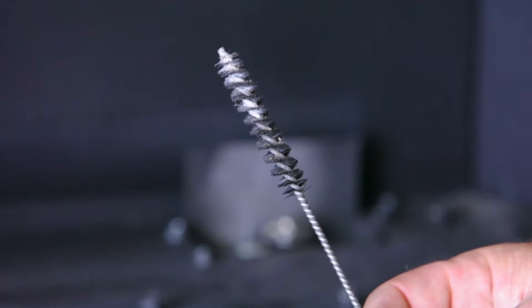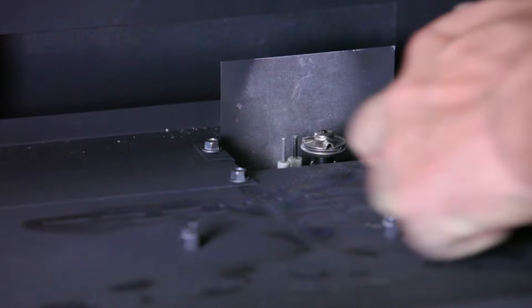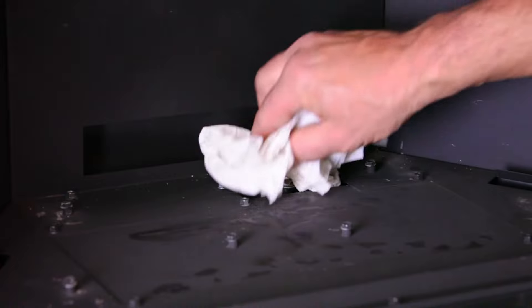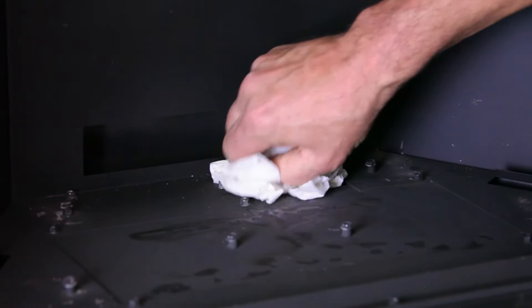Using a pipe cleaner brush, brush around the pilot hood to ensure you are removing any excess buildup in the ridges of the hood. Once you have completed these steps, take a dry lint-free cloth and wipe away any remaining debris from the sensor and pilot hood.